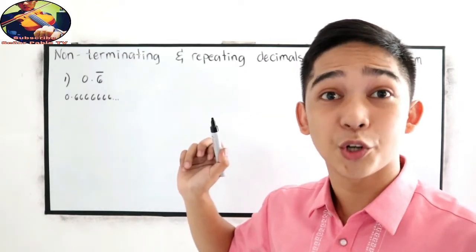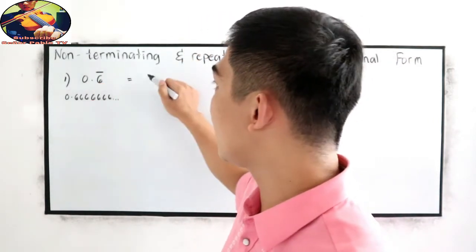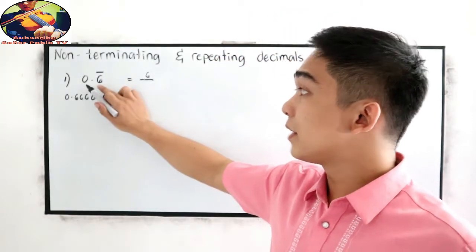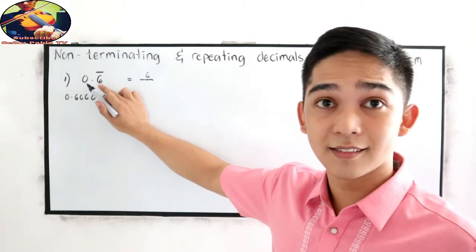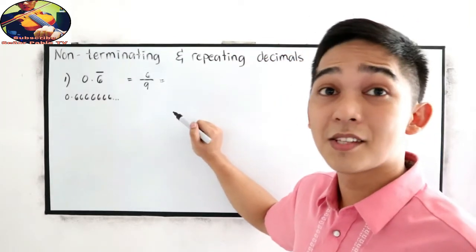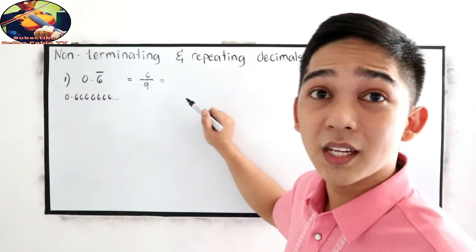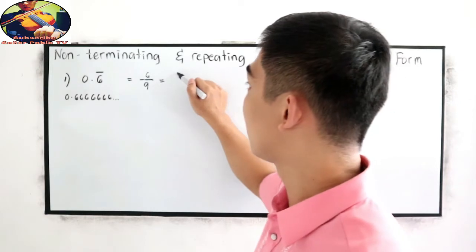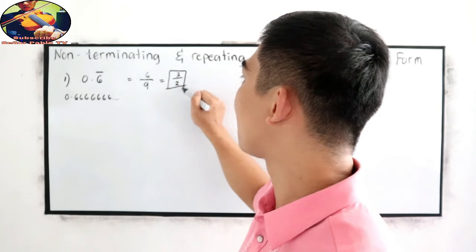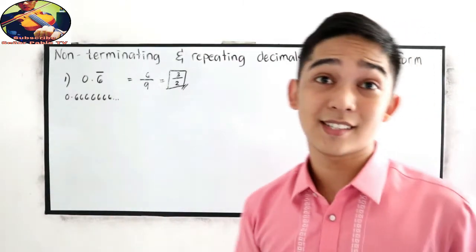Let me teach you our shortcut. That is equivalent to copying the 6 over — instead of writing 0, we're going to use 9. So, 6 over 9. In simplest form, that is divisible by 3, giving us 3 over 2. If you press that in your calculator, that is 0.666666.